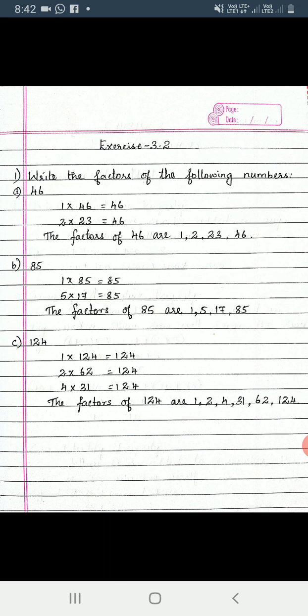Similarly, we will move on to question b. The number is 85. So we will discuss wherever the number 85 is available in the multiplication table. First starting with 1: 1 into 85 is 85. Then we cannot find 85 in table 2, 3, 4. Then we have in 5th table: 5 into 17 is 85. So we have only two possibilities. Finally, the factors of 85 will be 1, 5, 17, and 85.